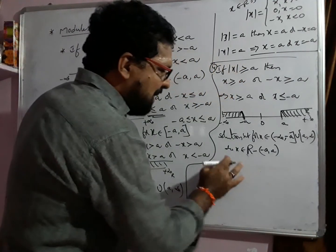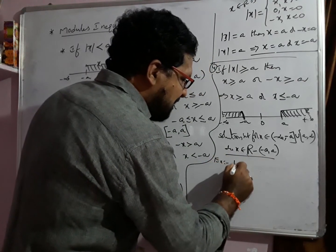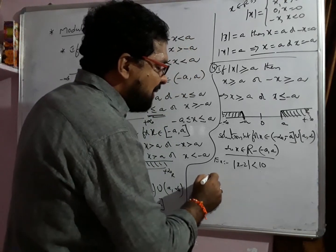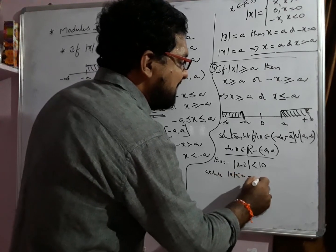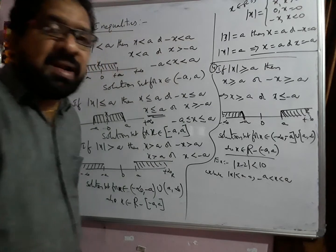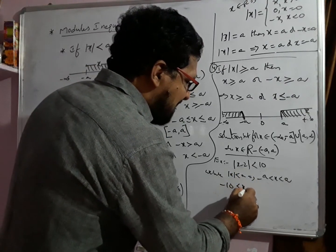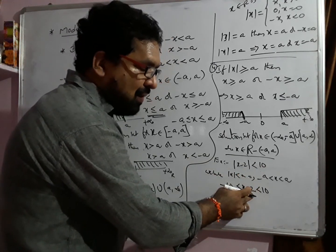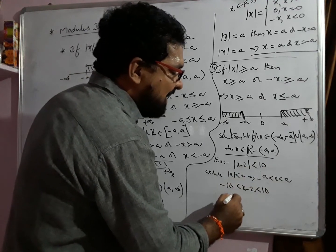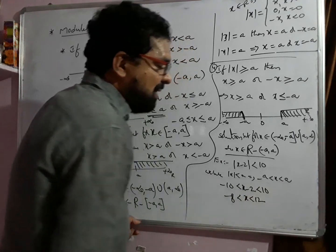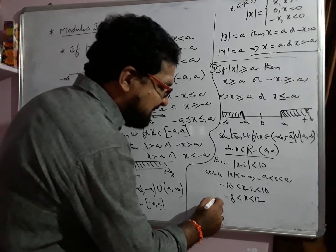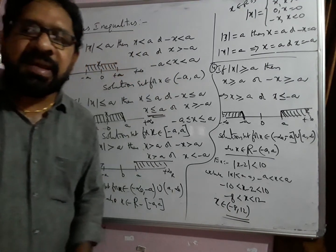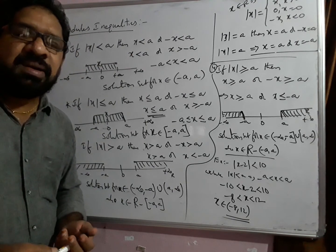For example, let's discuss a small example problem. Mod of (x minus 2) is less than 10. We know that mod x less than a implies minus a less than x less than a. Similarly, minus 10 less than x minus 2 less than 10. Adding 2 on both sides gives minus 8 less than x less than 12. So x belongs to open interval (minus 8, 12).